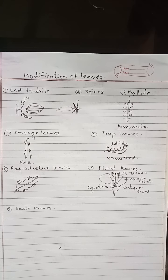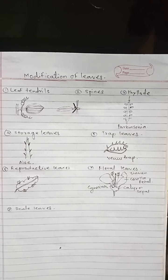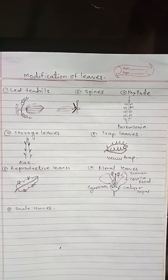Storage leaves: leaves become fleshy due to storage of water or food material. Such leaves are called storage leaves. They are usually found in succulent plants. In plants like Aloe and Peperomia, storage-type leaves are present.